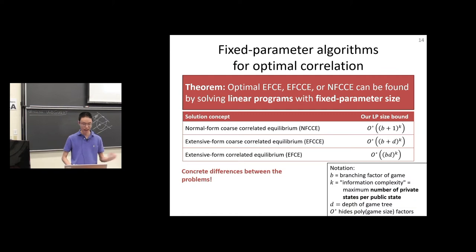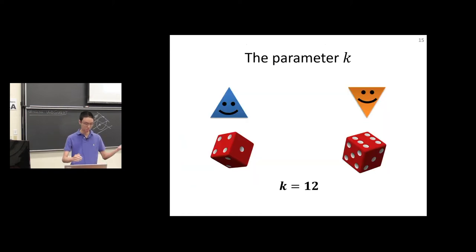So what is this parameter k? Suppose we have two players, each of whom rolls a six-sided die that is their private information. Then k is 12. It is simply the sum of the number of possible private states for each player. In a lot of games, this parameter is going to be big. This is unavoidable because of NP-hardness. But there will be games for which k is small. For example, there are games in which there is no random chance at all, or even the game is complete information. In these cases, k is very small.